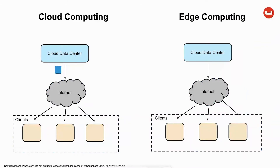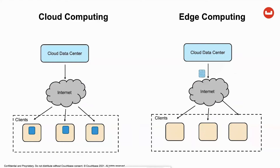Cloud-centric computing brings economy of scale, but for applications that need edge computing architectures, there's a paradigm shift in the way data is generated. In traditional cloud-centric architectures, data is generated in the cloud and then distributed to the edge. But for edge computing applications like mobile and IoT, the data is flowing up from the edge to the cloud. Transferring that massive volume of data generated at the edge all the way to the cloud can be cost prohibitive.